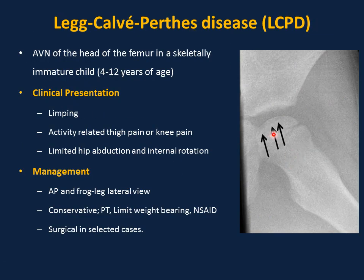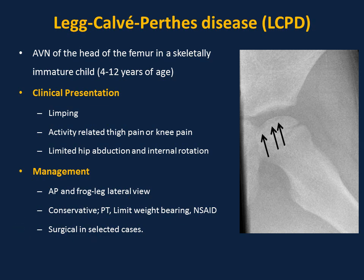Legg-Calvé-Perthes disease is avascular necrosis of the head of the femur in children between 4 and 12 years of age. The exact etiology is unknown, but proposed mechanisms include trauma, hypercoagulability, and genetics. Clinical presentation is a limping with activity-related thigh pain or knee pain. Physical examination shows limited hip abduction and internal rotation. Diagnosis is made with AP and frog leg lateral X-ray views. Treatment is conservative — physical therapy, limited weight bearing, and NSAIDs; surgery in selected cases.